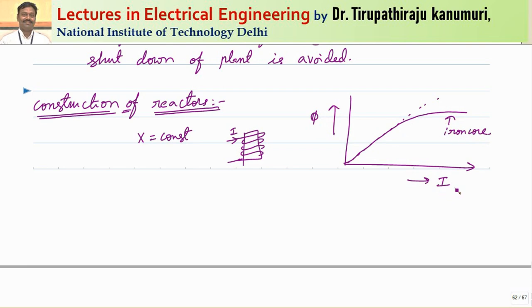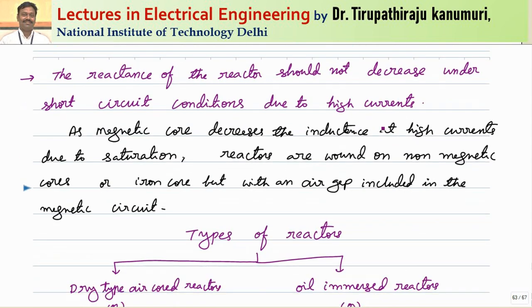Under fault conditions, the current drawn is extremely high, causing the core to saturate. As a result, the reactance of the reactor decreases — it is no longer constant. To maintain constant reactance, operation must be kept within the linear range, which requires a large core to avoid saturation. Therefore, reactors are either wound on non-magnetic cores, or if an iron core must be used, air gaps are included in the magnetic circuit.